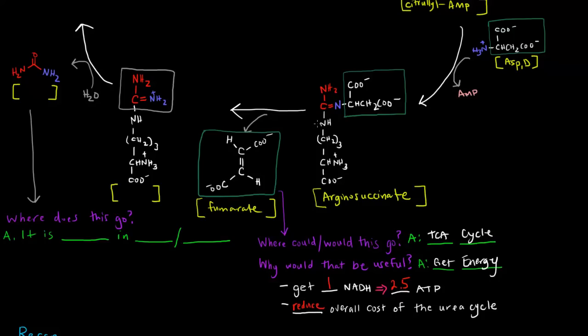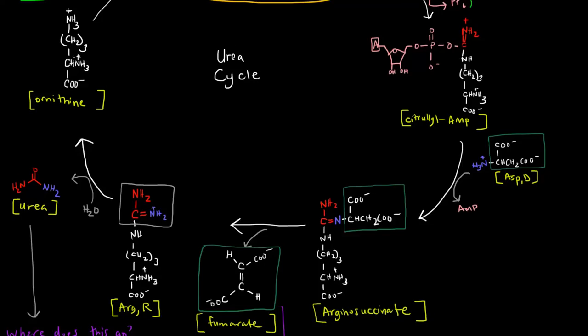Once that fumarate hops off, then we should be left with this arginine here. So this is arginine. Arginine now has this red portion here from the carbamoyl phosphate and this blue portion here from the aspartate. And then that portion right there is actually going to be the part that hops off as urea. We add water and get this portion to hop off as urea. And then that arginine regenerates this ornithine, which is now ready for another round of the cycle.